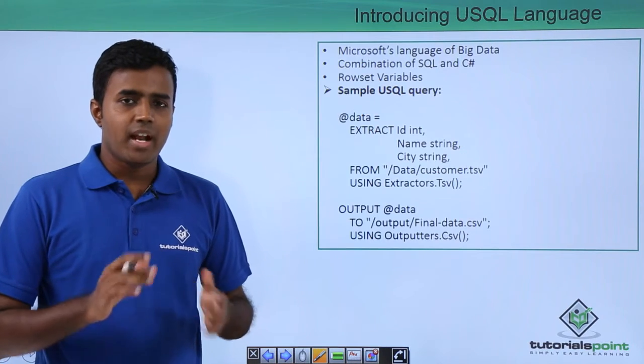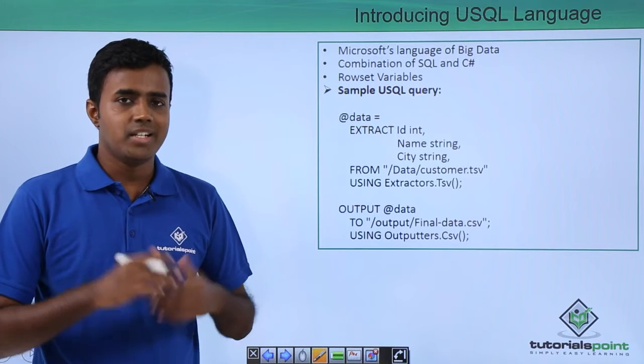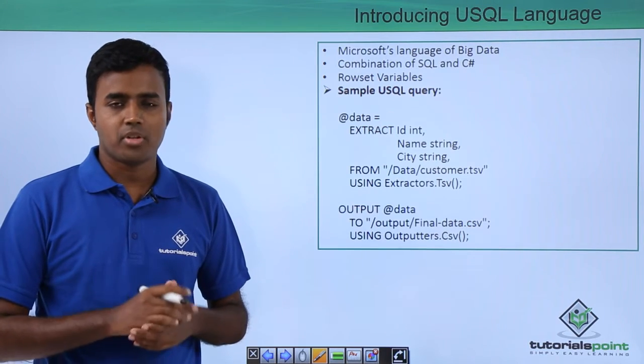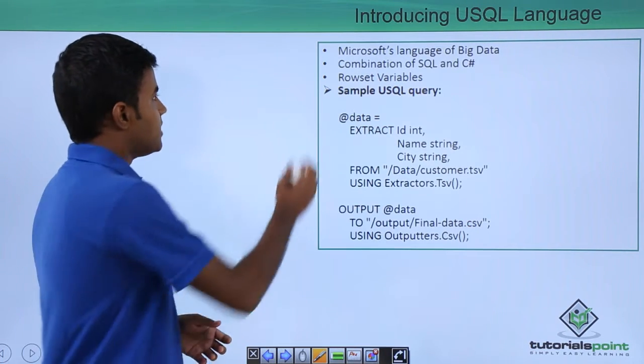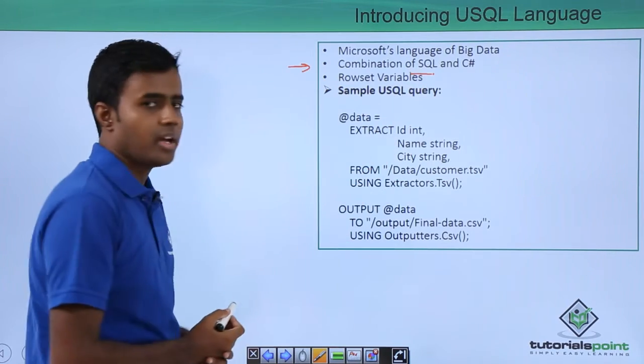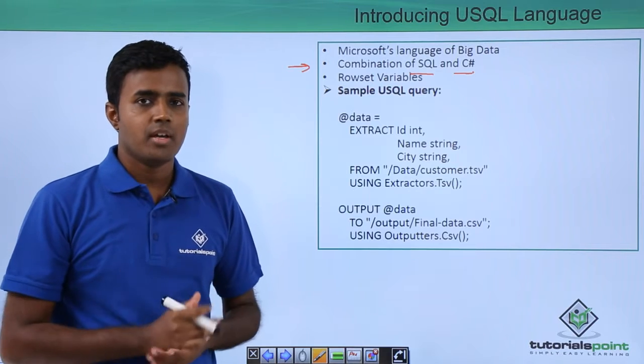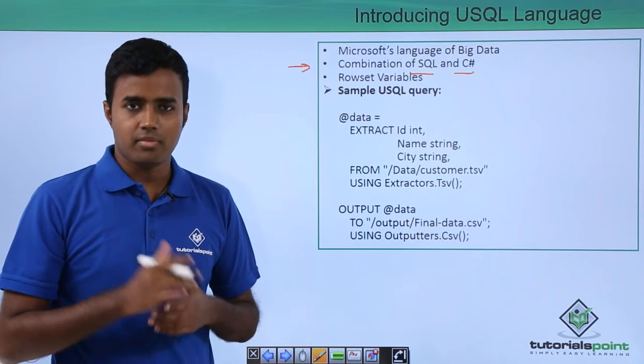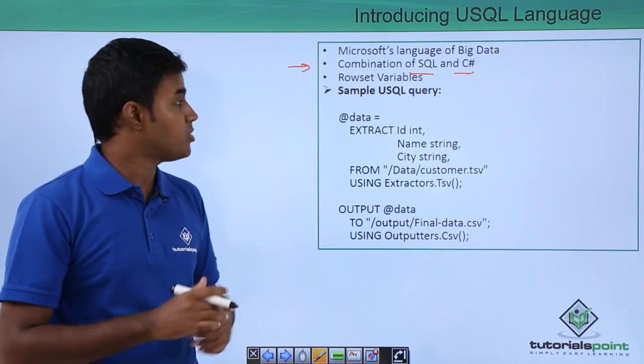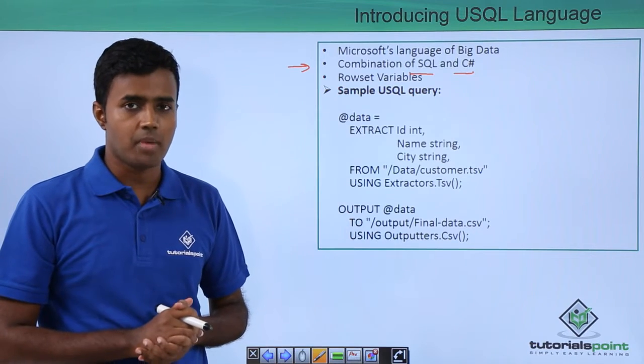The USQL language is Microsoft's internal language for big data processing systems. It is a combination of SQL language and C# language, making use of the declarative power of SQL and the programmatic power of C#.